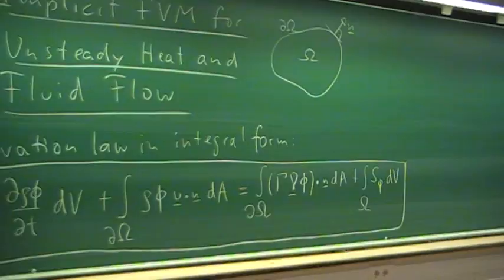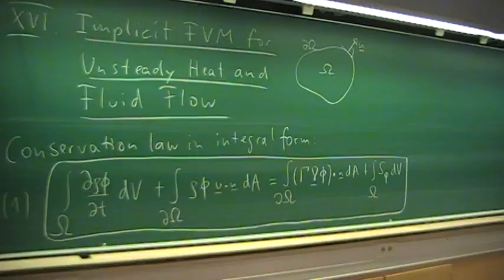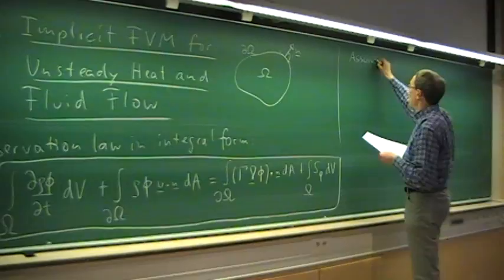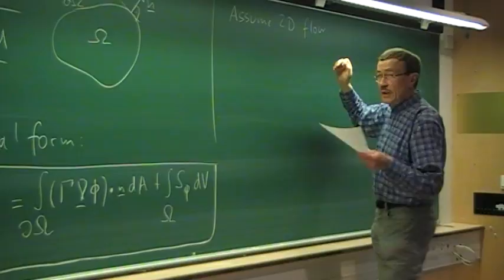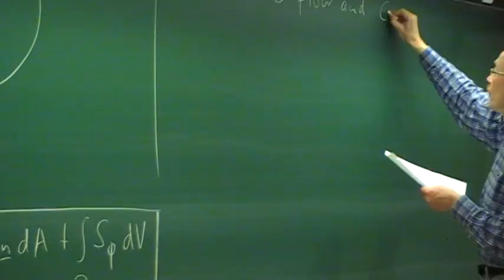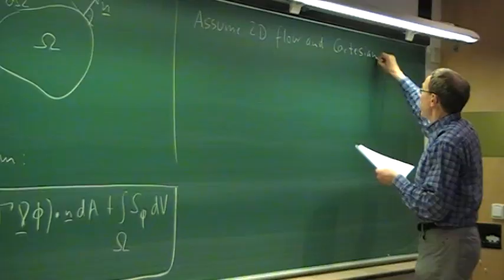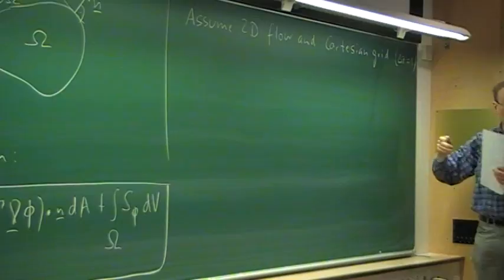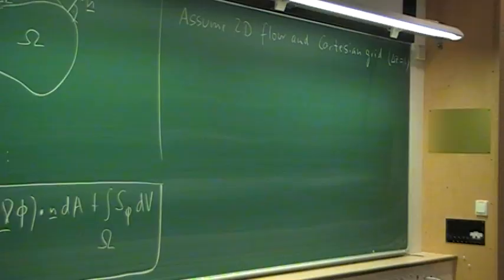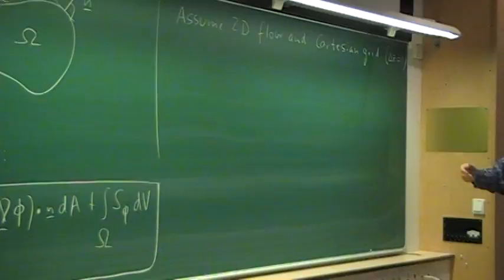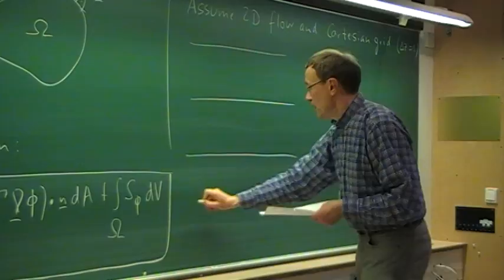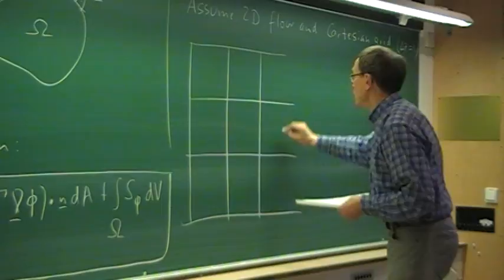We now assume a Cartesian grid where Δx is constant and Δy is constant, though not necessarily equal, and we assume 2D flow or a 2D heat transfer problem. In 3D, we would assume the grid spacing in z is 1 — just two slices in the x-y plane — but the main point is we use the Cartesian grid form we have been considering throughout.